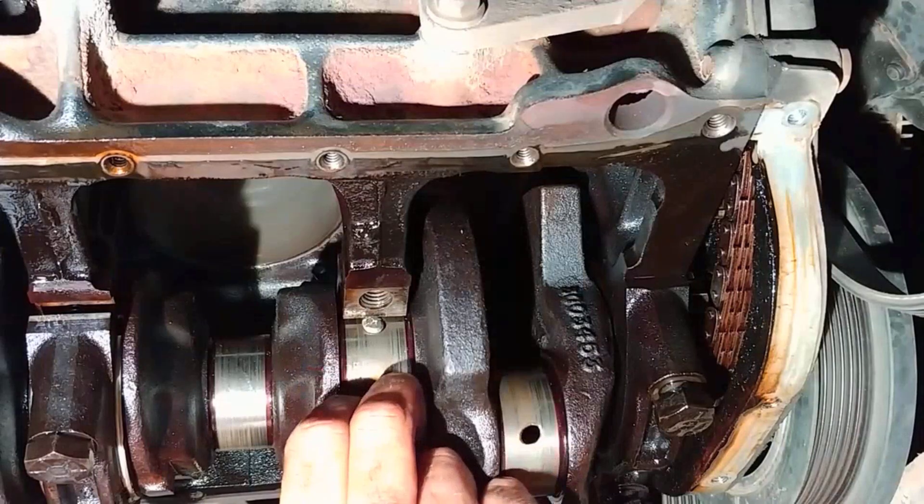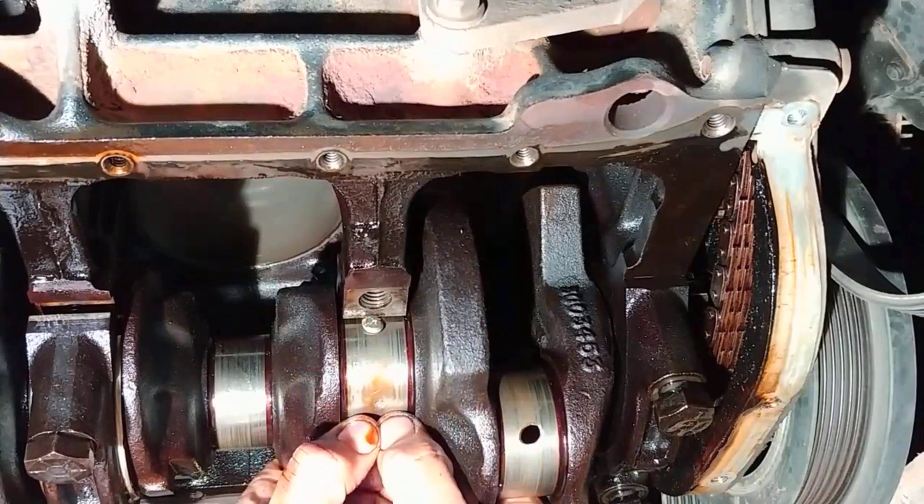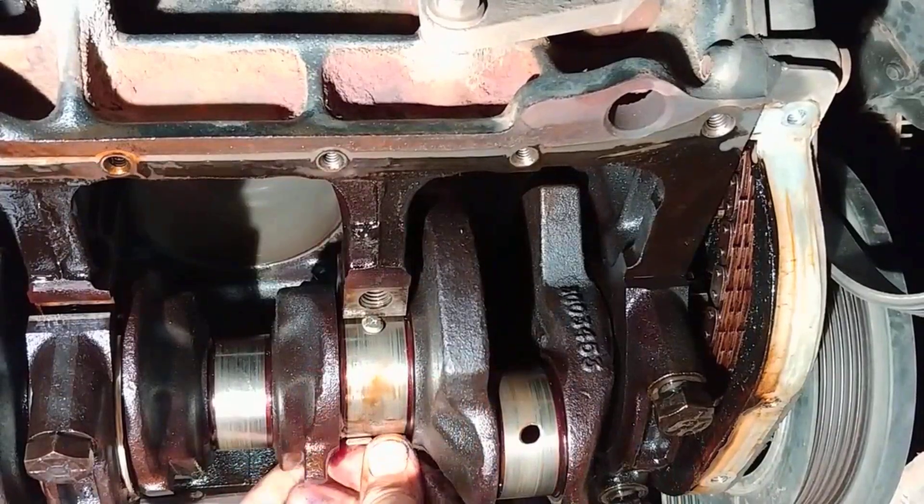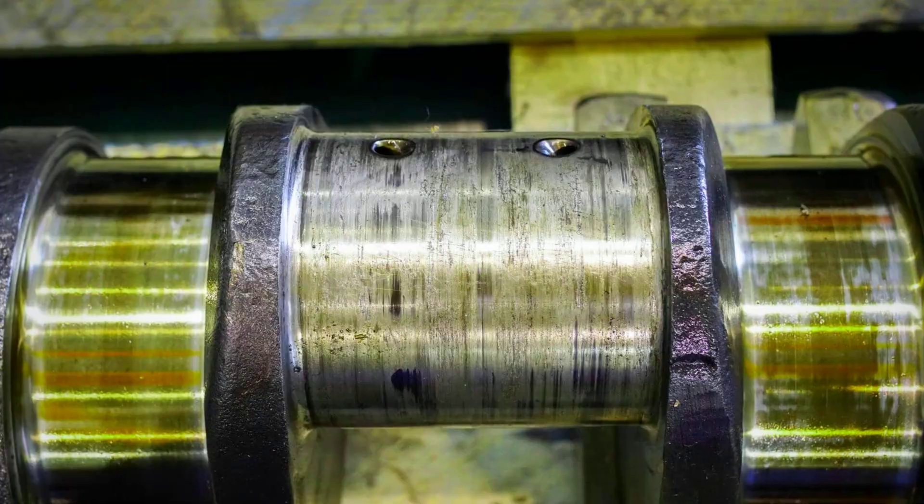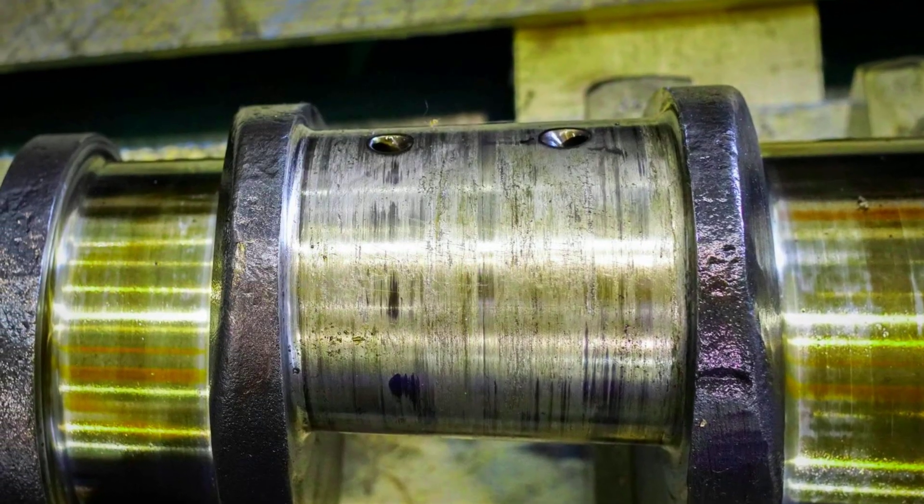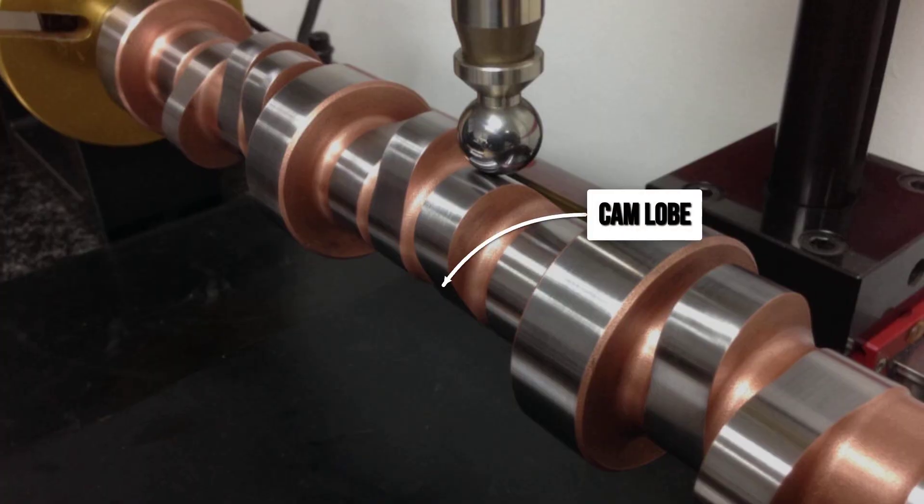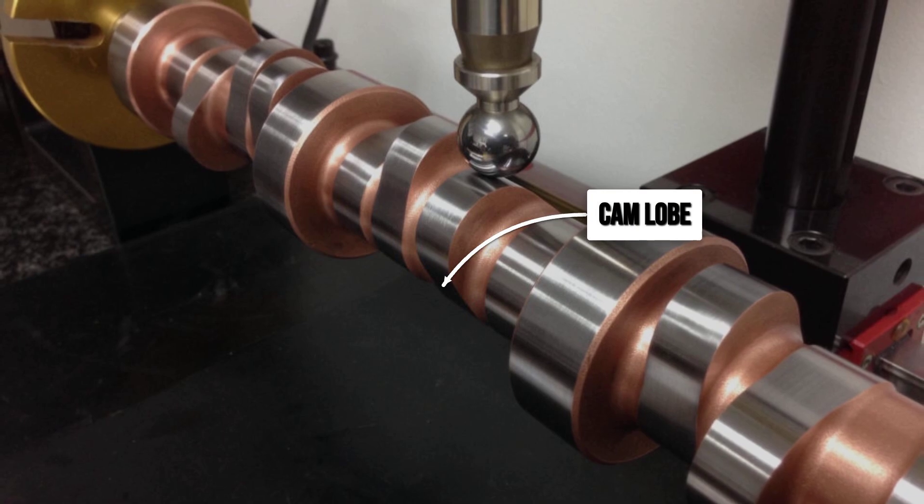That means the protective layer between metal parts does not collapse even as the miles rack up. This kind of shear stability is not just a technical detail, it is what keeps bearing surfaces smooth and cam lobes free from scoring, especially in engines that see hard driving or extended oil change intervals.